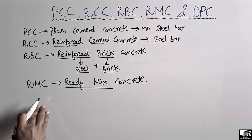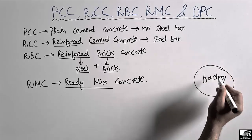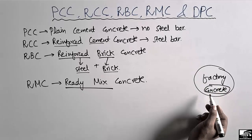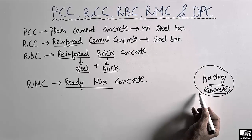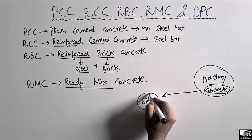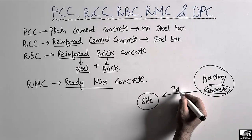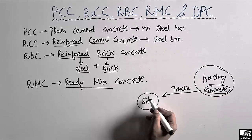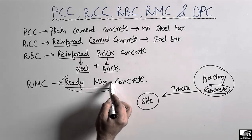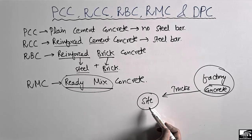We bring this concrete directly from the factory to the site where we have to pour it into the structure. The concrete is made in the factory and then brought through trucks to the site in order to make the structure. When concrete is made in the factory and brought by trucks onto the site, it is known as Ready Mix Concrete — it has been already mixed in the factory.